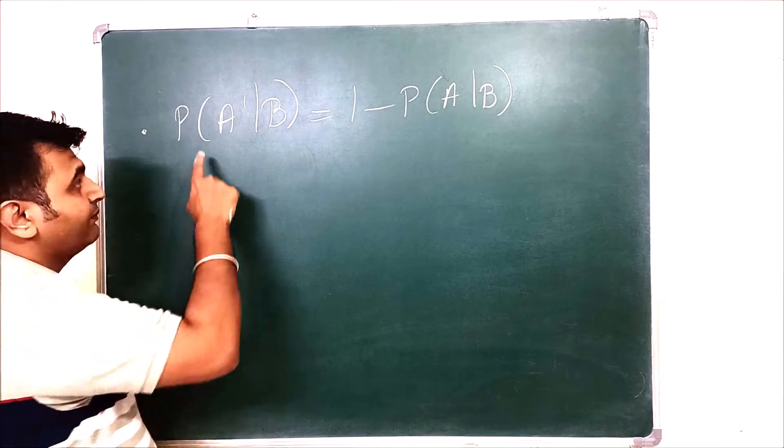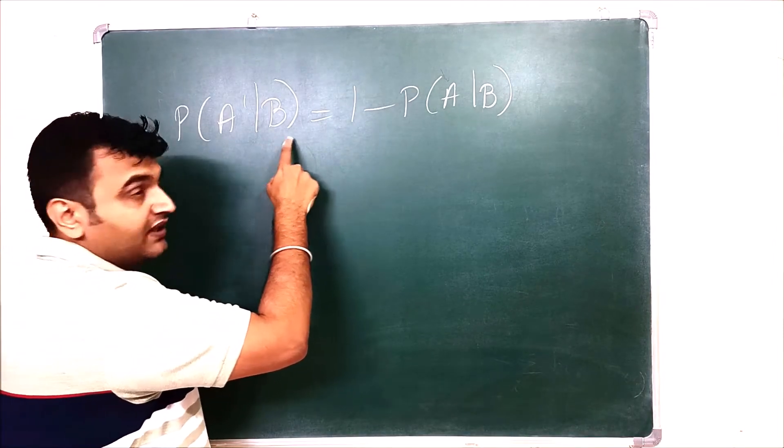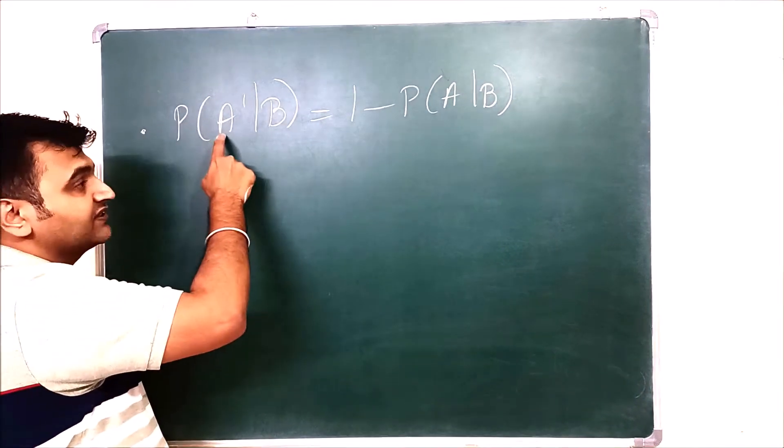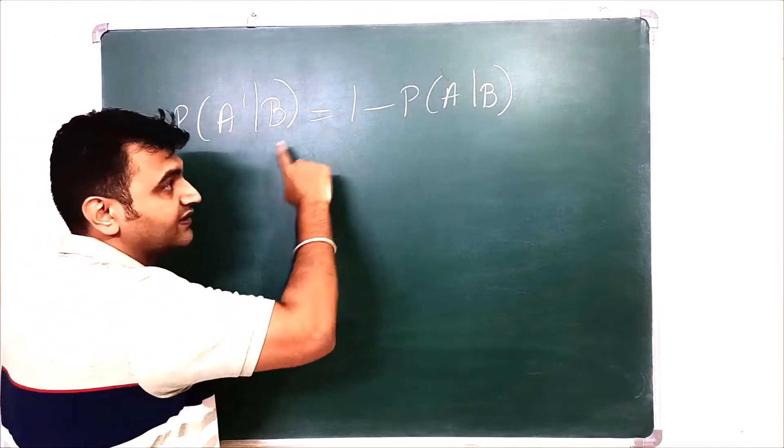So for conditional probability, probability of A complement given B is one minus probability of A given B. So for the first component, if you have the complement, then this is good.